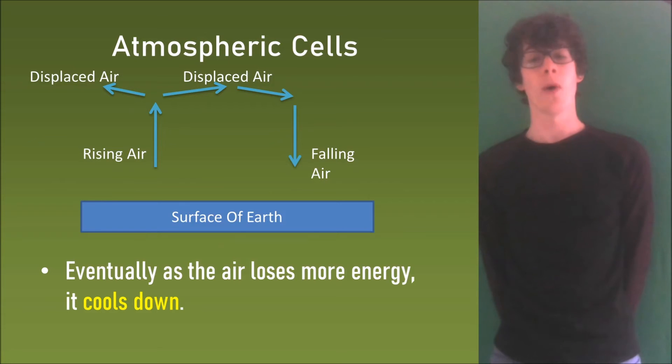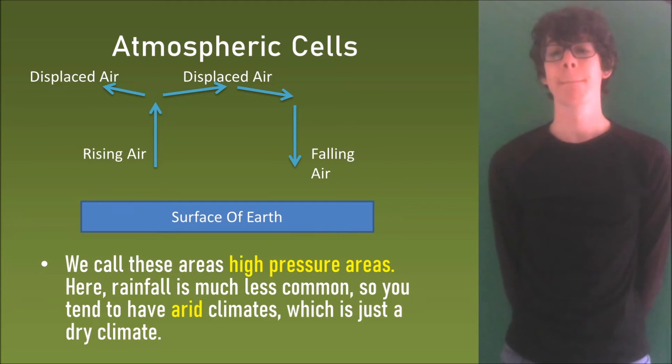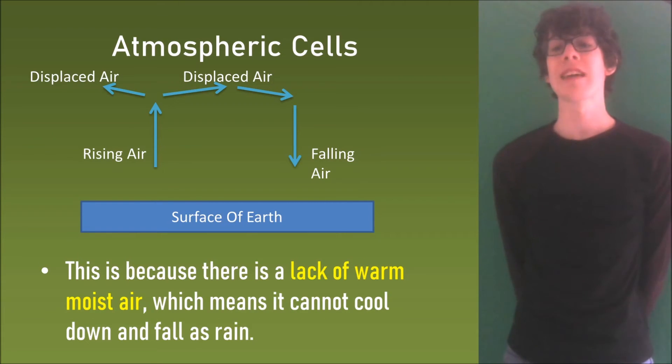Eventually as the air loses more energy it cools down. The cooler air then falls back to the Earth's surface. This is shown here. We call these areas high pressure areas. Here rainfall is much less common so you tend to have arid climates which is just another name for a dry climate. This is because there is a lack of warm moist air which means it cannot cool down and fall as rain.